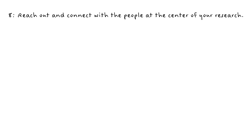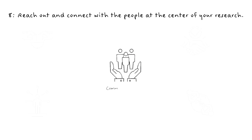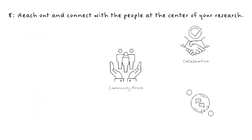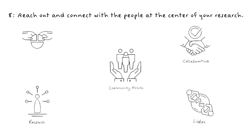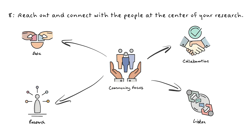8. Reach out and connect with the people at the centre of your research. To tell relevant and impactful data stories, data communicators need to be empathetic. Building relationships with people and communities that you're researching is fundamental, and maintaining these relationships is just as important. You should do research and analysis with communities, not on behalf of them. Buy-in from members of the community, policy makers and other stakeholders helps research be more impactful, relevant and embraced by a wider audience.